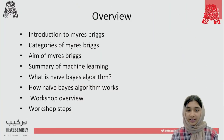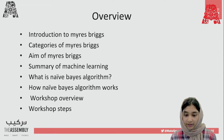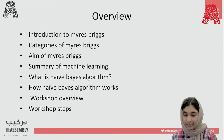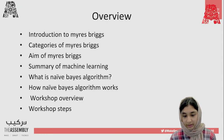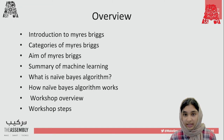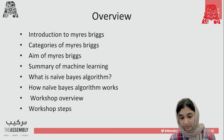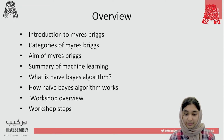So before we start, let's do an overview. We'll be introducing the Myers-Briggs and the categories present in it, as well as the aim of this workshop and the Myers-Briggs personality indicator. We'll be talking about machine learning, the Naive Bayes algorithm — what it is and how it works — as well as an overview of the workshop and the steps present in it.